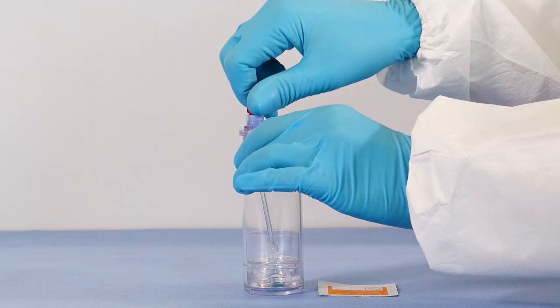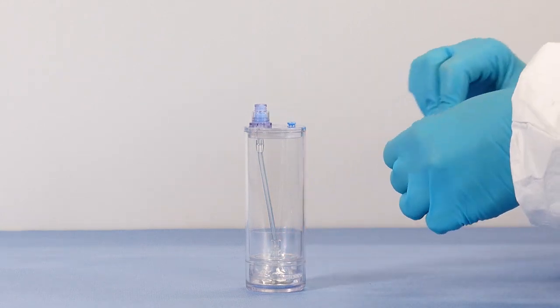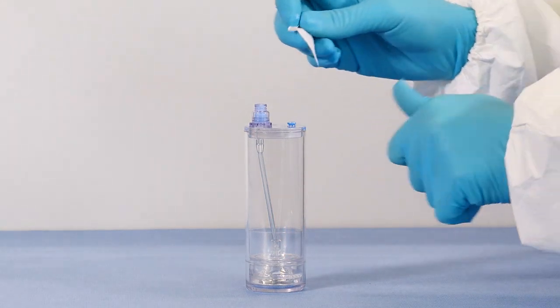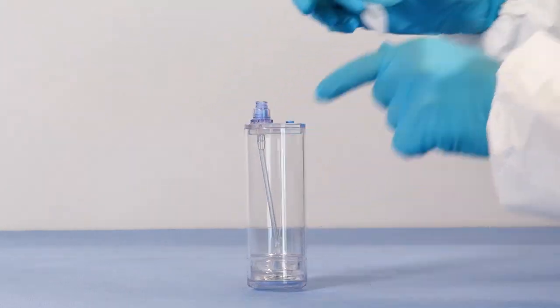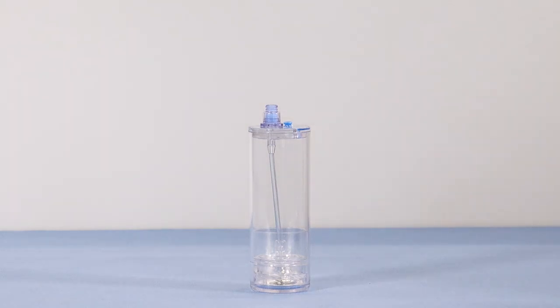To begin, remove the red cap from the needleless valve port of the device. Swab the needleless port with sterile alcohol before and after accessing with a sterile syringe.